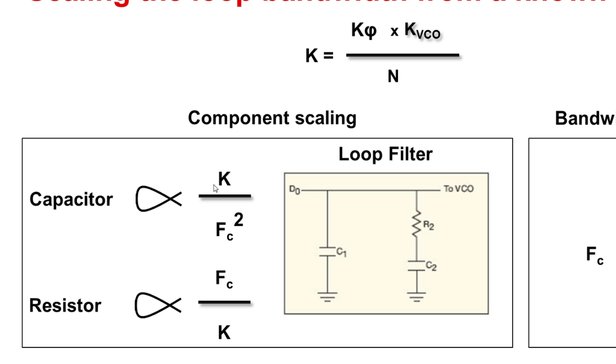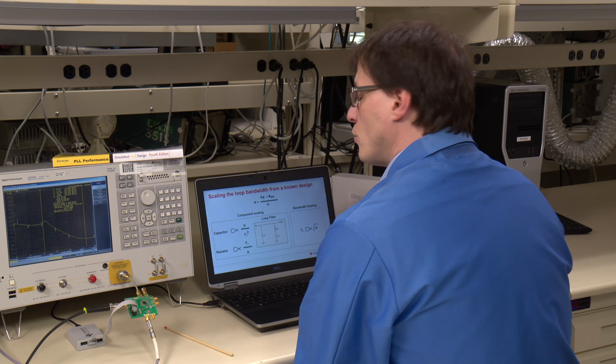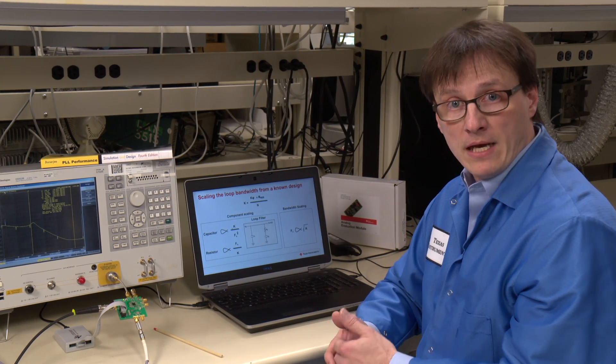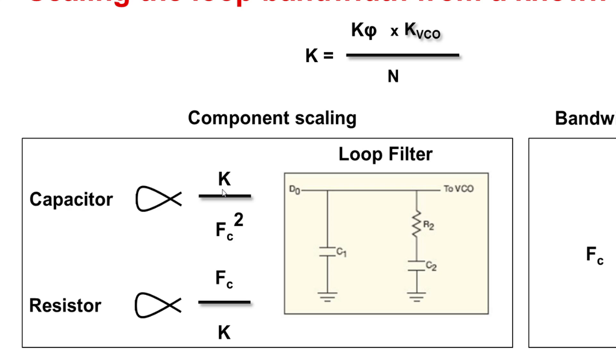In component scaling, let's say that I want to increase my charge pump gain so the K factor here will double. What should I do with my components so that I can get back the same loop bandwidth? If I double my charge pump gain, my capacitors are going to double and my resistors are going to be half. Four times the K factor means four times the capacitor value and one-fourth of the resistor value.